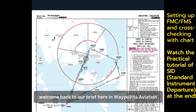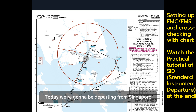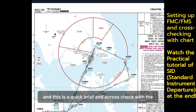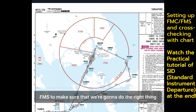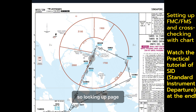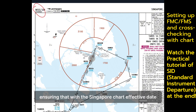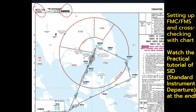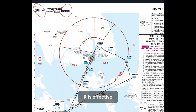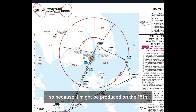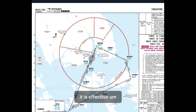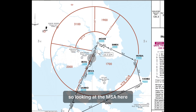Welcome back to our brief here in Waypoints Aviation. Today we're going to be departing from Singapore. This is a quick brief and cross-check with the FMS to make sure we're doing the right thing. Looking at our page, we're ensuring that we have the Singapore chart and checking the effective date — it is effective. Note that it might be produced on the 15th but effective from the 21st, so we have to confirm it is actually effective.